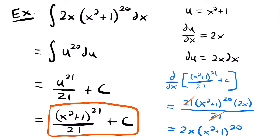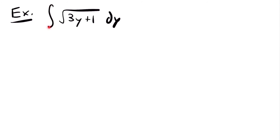Now let's look at a different example. For our next example, we have the integral of the square root of (3y + 1) dy. In this case we are working in terms of y, which doesn't change our process, but remember that we take the derivative with respect to y, not x. What I want you to see here is that when you set a value equal to u, the derivative won't always match up nicely with what you find in your integral, and you'll need to make some adjustments.